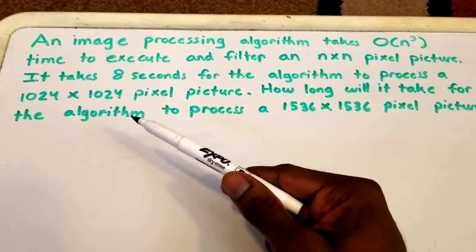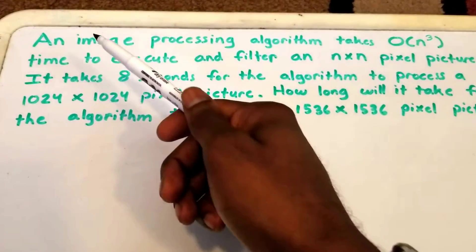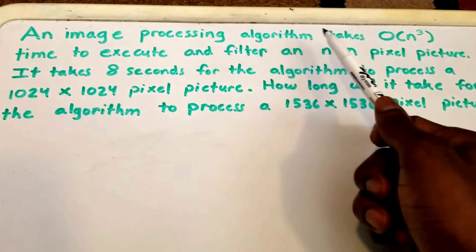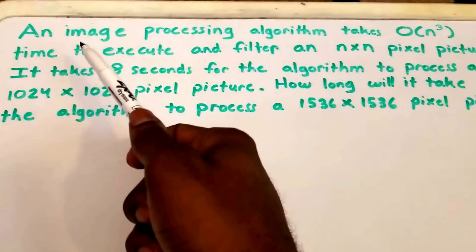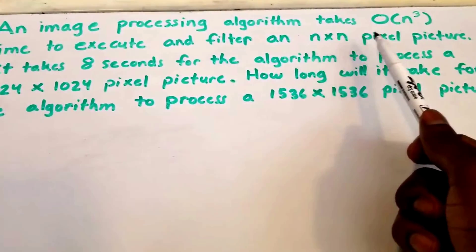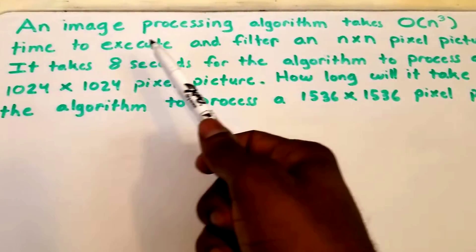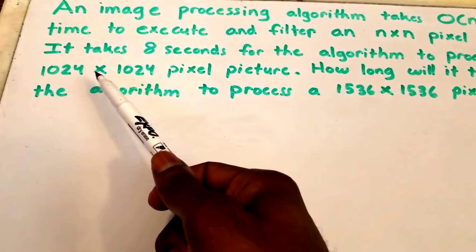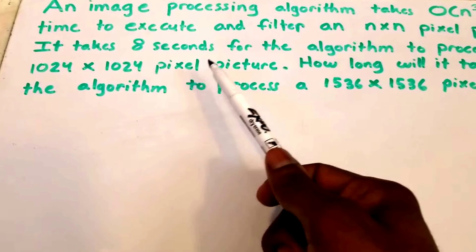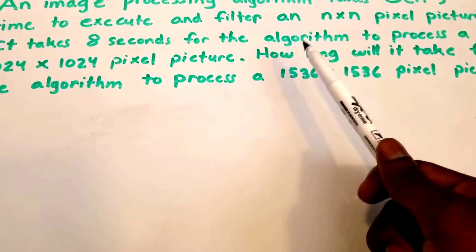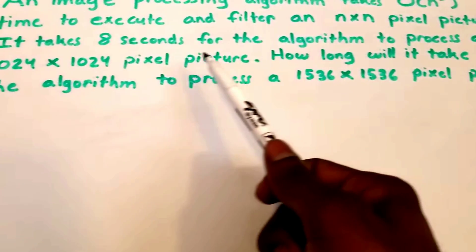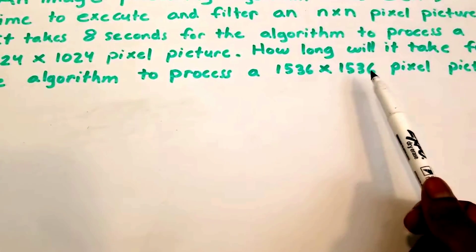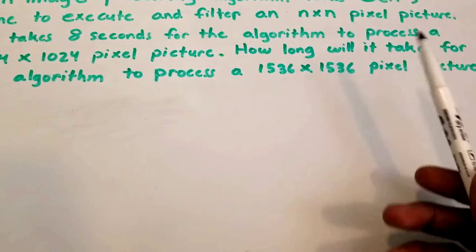Welcome to this video on algorithm analysis. We have a problem: an image processing algorithm takes O(n³) time to execute and filter an n by n pixel picture. It takes eight seconds for the algorithm to process a 1024 by 1024 pixel picture. The question is: how long will it take to process a 1536 by 1536 pixel picture?